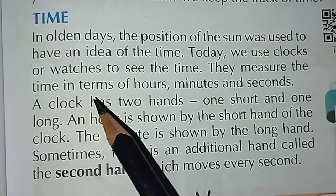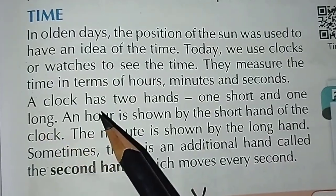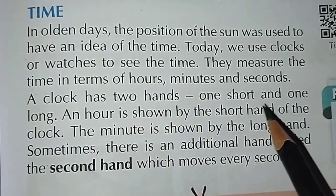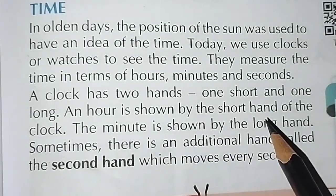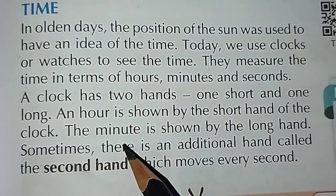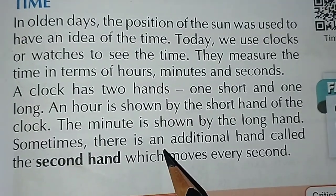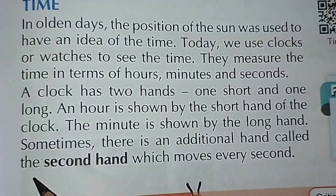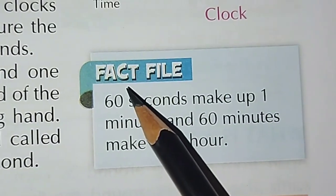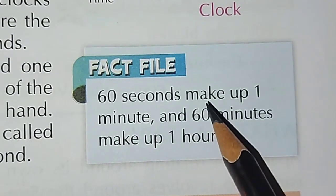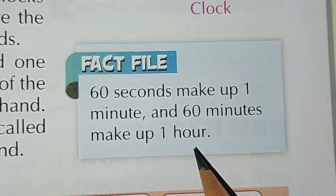They measure the time in terms of hours, minutes and seconds. A clock has two hands, one short and one long. An hour is shown by the short hand of the clock. The minute is shown by the long hand. Sometimes, there is an additional hand called the second hand, which moves every second. 60 seconds make up one minute and 60 minutes make up one hour.